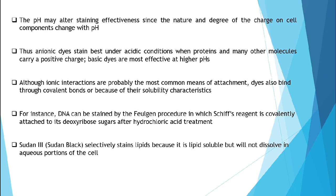The pH may alter staining effectiveness since the nature and degree of the charge on cell components change with pH. Anionic dyes stain best under acidic conditions when proteins and many other molecules carry a positive charge, while basic dyes are most effective at higher pH. Although ionic interactions are the most common means of attachment, dyes also bind through covalent bonds or because of their solubility characteristics.